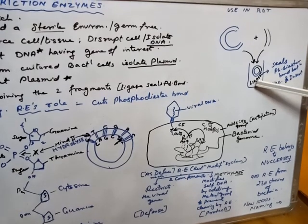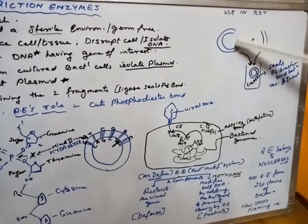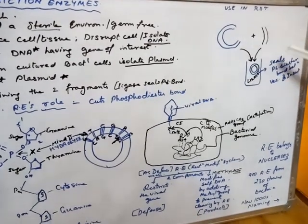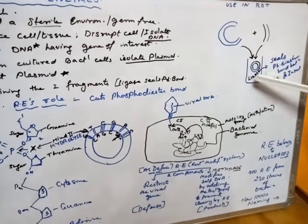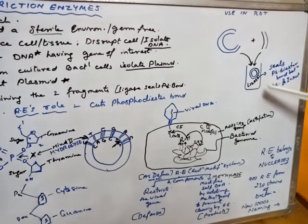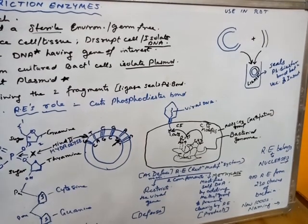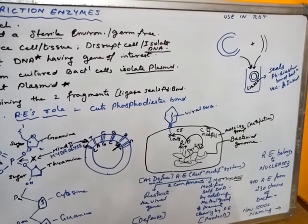What happens? The ligase seals the ends. Jo cut ends hain. Woh cut ends bhi alag-alag type ke hoote hain. We will discuss that later. Toh ligase enzyme seals those cuts. Toh yeh ek recombinant DNA ban gaya. Which is going to be used for further product obtaining or research work. I hope the topic is clear. Ligase role is sealing phosphodiester bond between vector and insert.